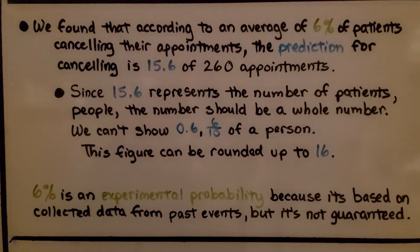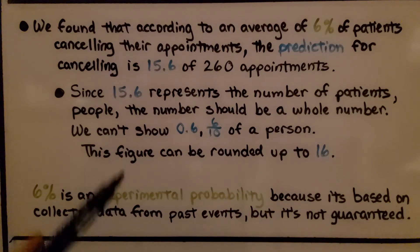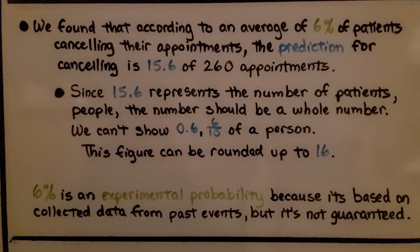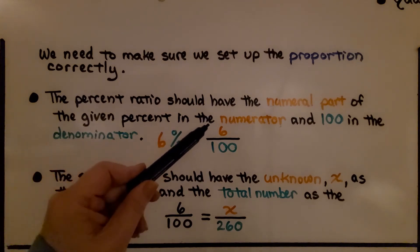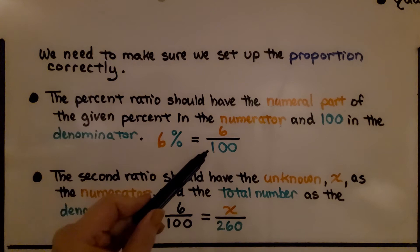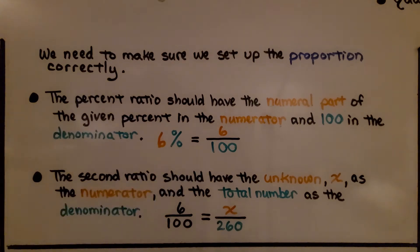We found that according to an average of 6% of patients canceling, the prediction is 15.6 out of 260 appointments. Since 15.6 represents a number of people — patients — the answer should be a whole number; we can't have six tenths of a person, so we round up to 16. Note that 6% is an experimental probability because it's based on collected data from past events, but it's not guaranteed. When setting up the proportion, the percent ratio should have the numeral part of the given percent in the numerator and 100 in the denominator, and the second ratio should have the unknown x as the numerator and the total number as the denominator.